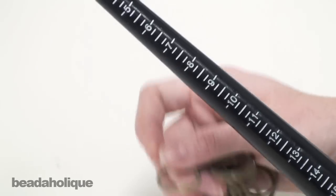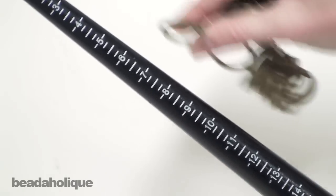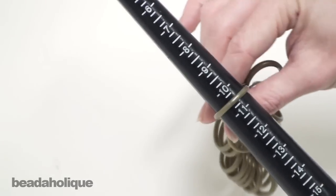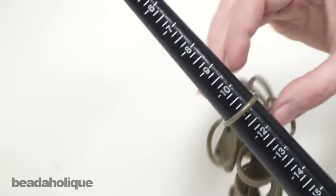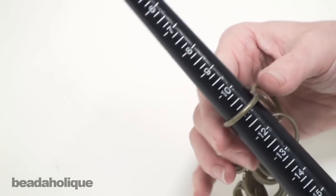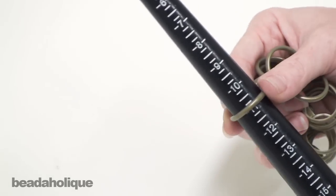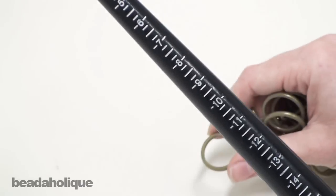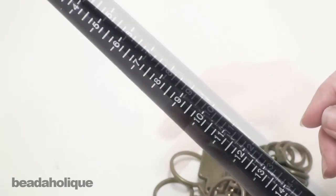So I can take any ring on my ring sizer and this one happens to be an eleven. I'll slide it down and it's going to fit perfectly on the eleven mark. So if you are a size eleven ring then that's what you're going to want to do. So you use these two tools in conjunction with each other.